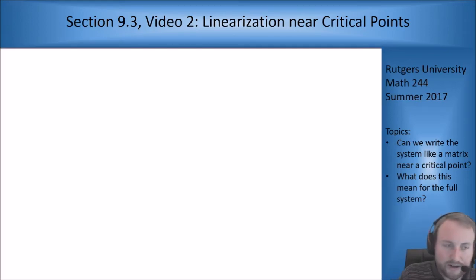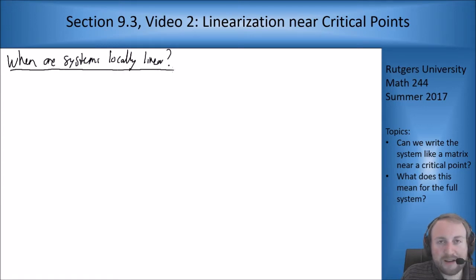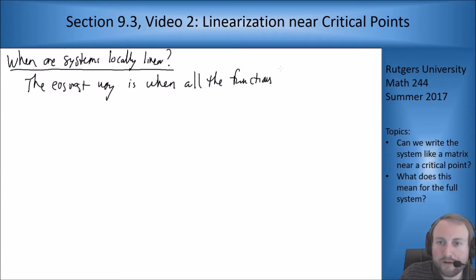The big question I'm trying to answer here is when are systems locally linear? You can verify it directly from the definition but the easiest way is when all the functions have at least two continuous derivatives.